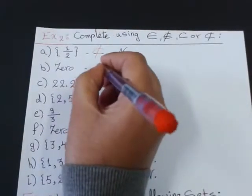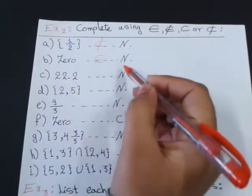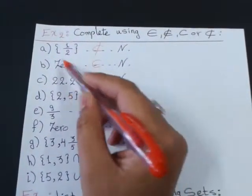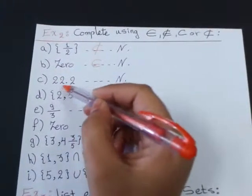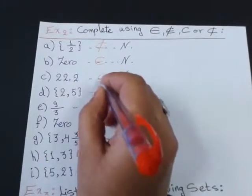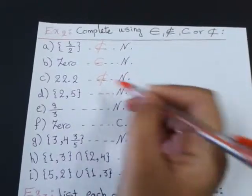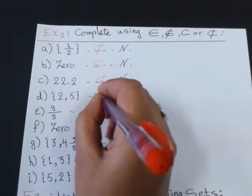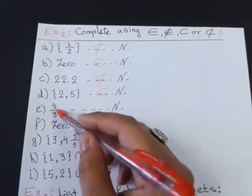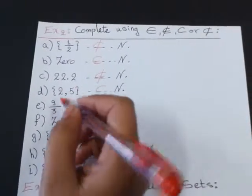0 is element of natural numbers. Element because it has no braces. 22.2 not element. 2 and 5 subset. 9 over 3. Let's check.